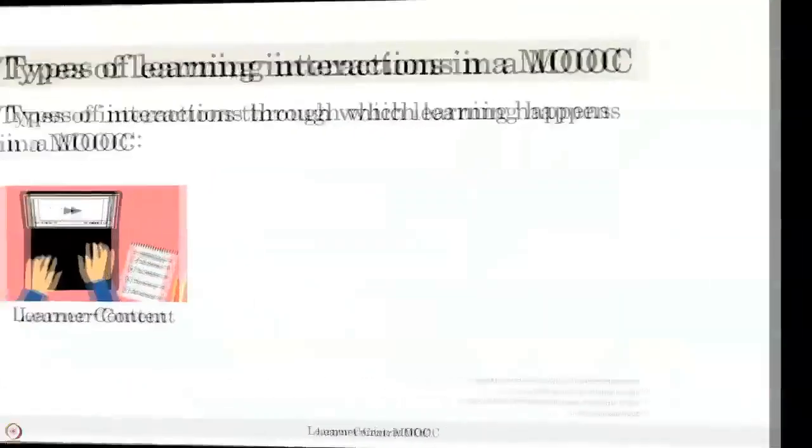If you are a MOOC instructor or if you are designing the online component of your flipped classrooms, you would know that there are three types of interactions through which learning happens in an online setting. The first one is very obvious — it is the learner-content interaction, where the learner is sitting in front of the computer and interacting with your learning dialogues or attempting a quiz in your course.